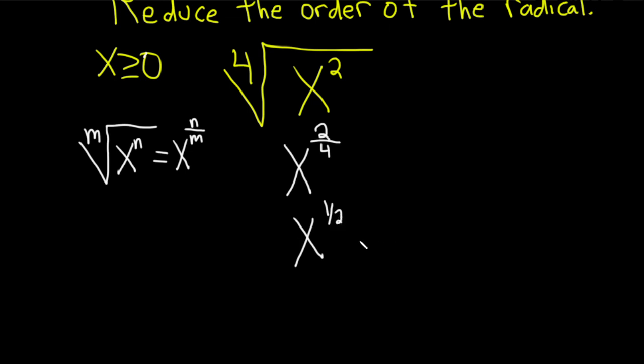This is going to be the root, so this will be 2, because that's the m. And then here we have x to the 1, but that's just the square root of x.